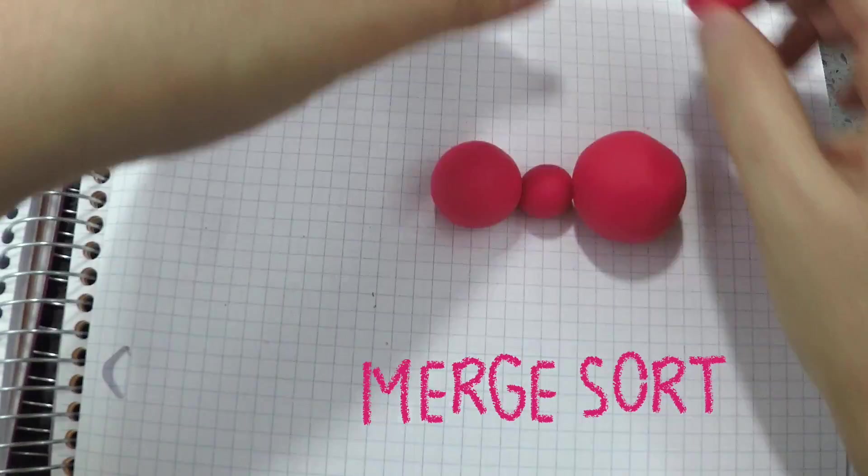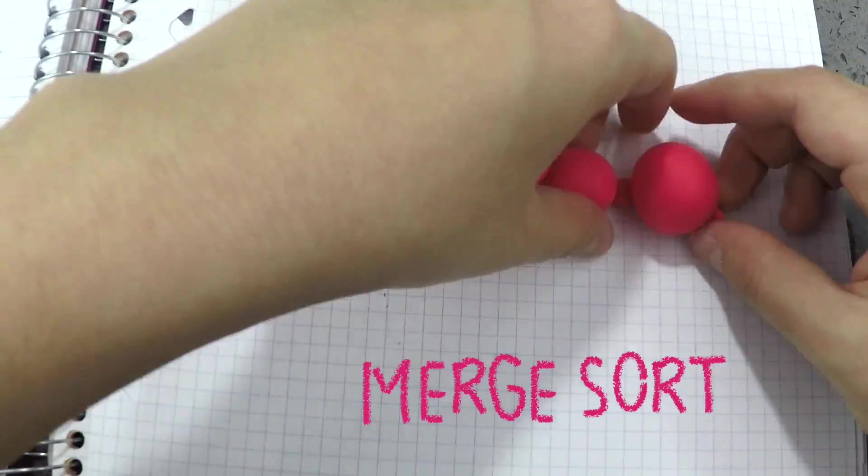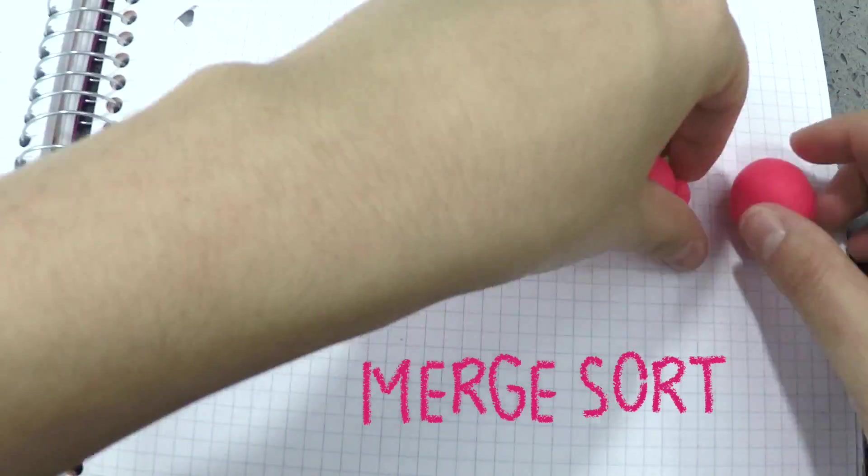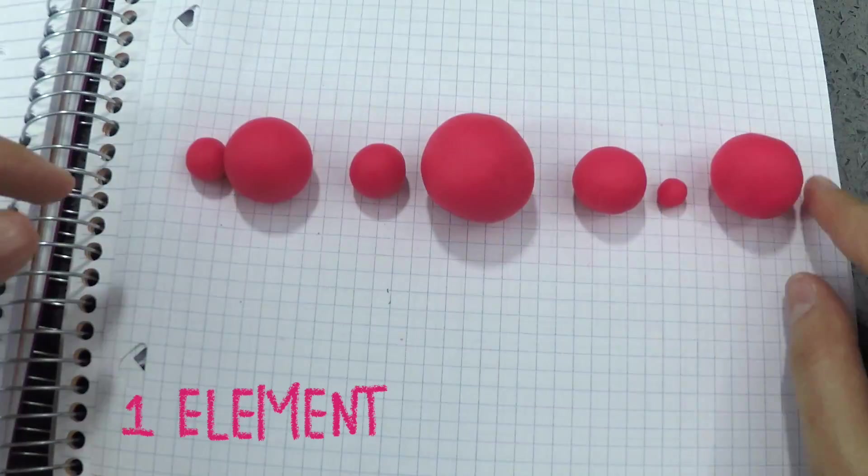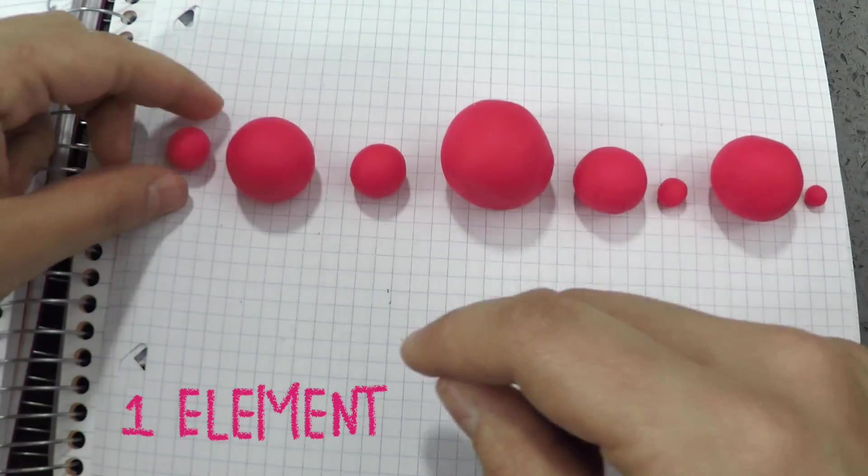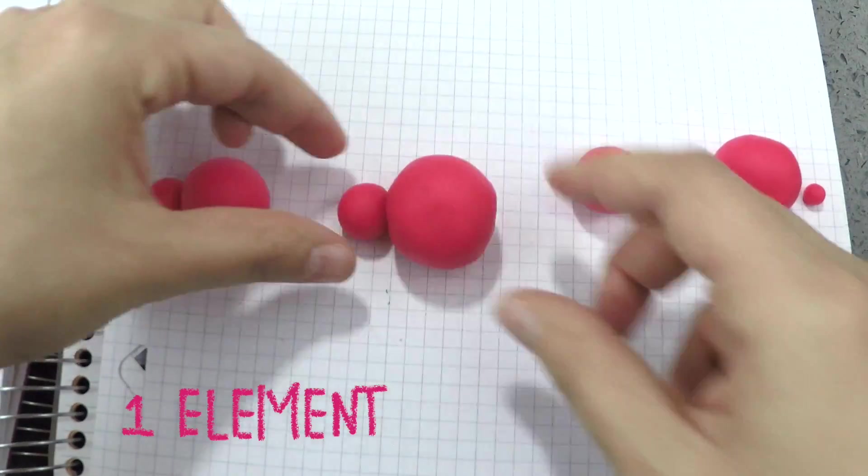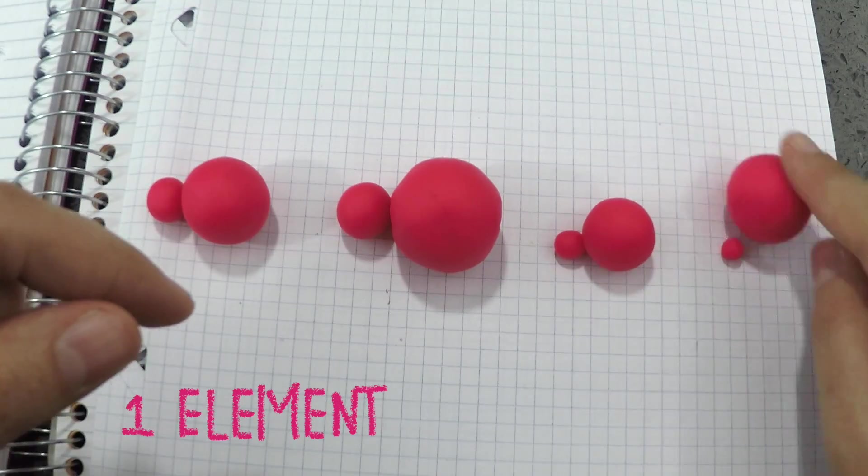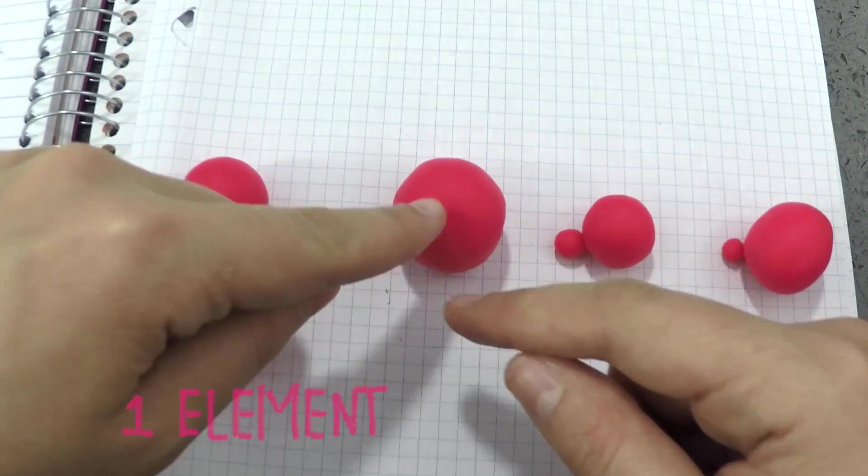How does it look like? We have an array of elements we'd like to sort. Then, we split the array in half recursively until we have one element subarrays. If the length of the array is at most one, then the array is already sorted so we do nothing. Otherwise, we split in halves.